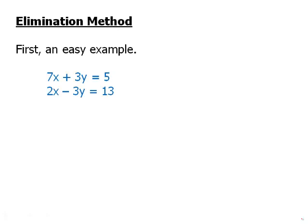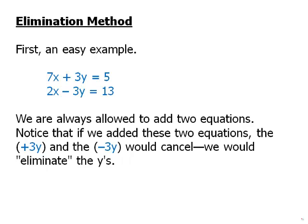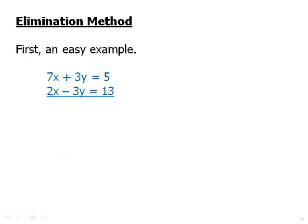So the elimination method — first, an easy example. Pause the video and think about how you would solve this, and then we'll talk about it. Notice, we are always allowed to add two equations — that's perfectly allowed. Notice that if we add these two equations, the positive 3y and the negative 3y would cancel; we would eliminate the 3y's. So when we add, 7x plus 2x gives us 9x, positive 3y plus negative 3y cancels to 0, and 5 plus 13 gives us 18. So the sum of those two equations is 9x equals 18.